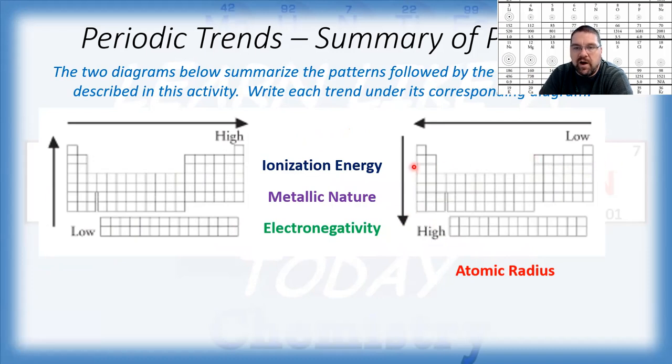Within a row, towards the left, you have fewer protons, so less attractive force. Therefore, the electrons are going to be able to be a little bit further out. So atomic radius, the highest values are going to be in the lower left.